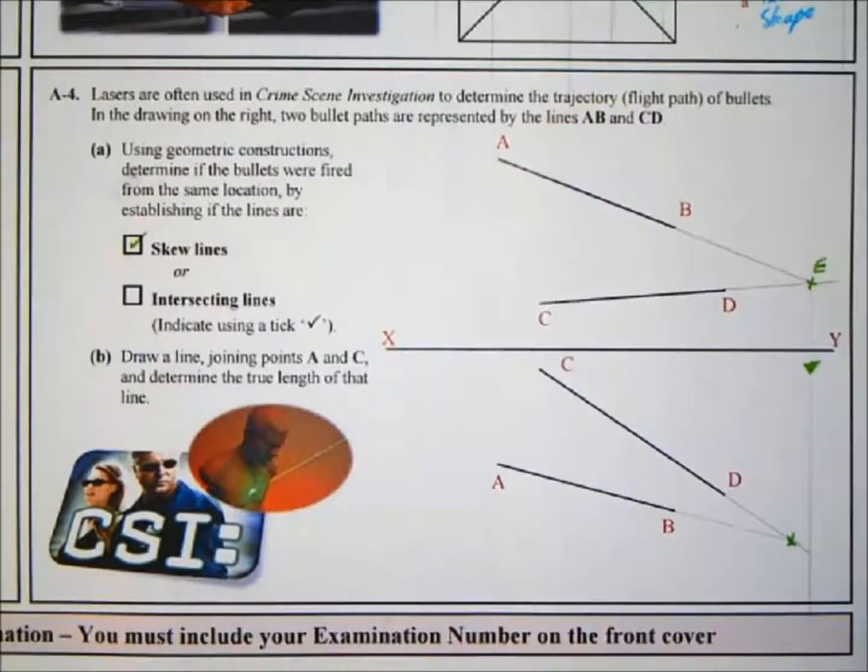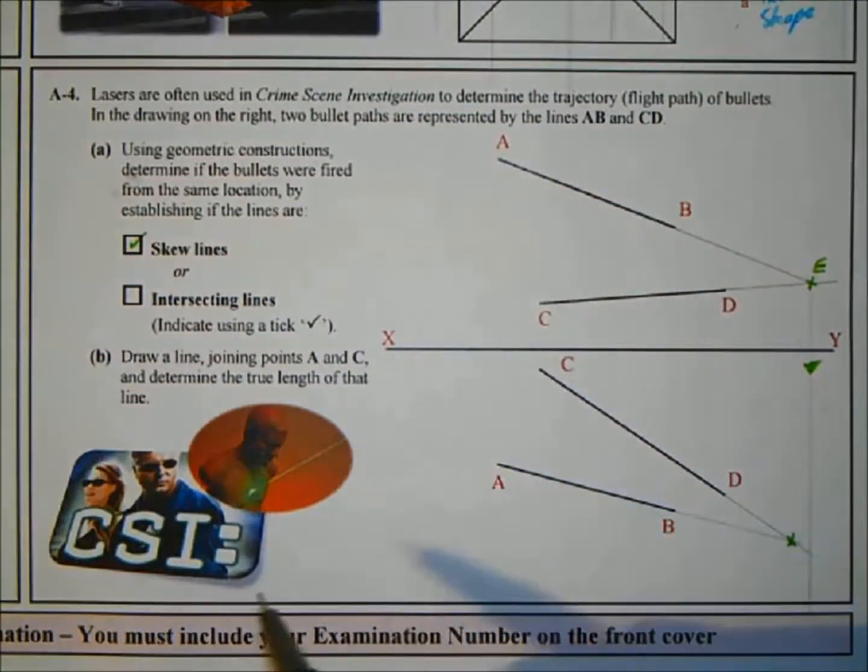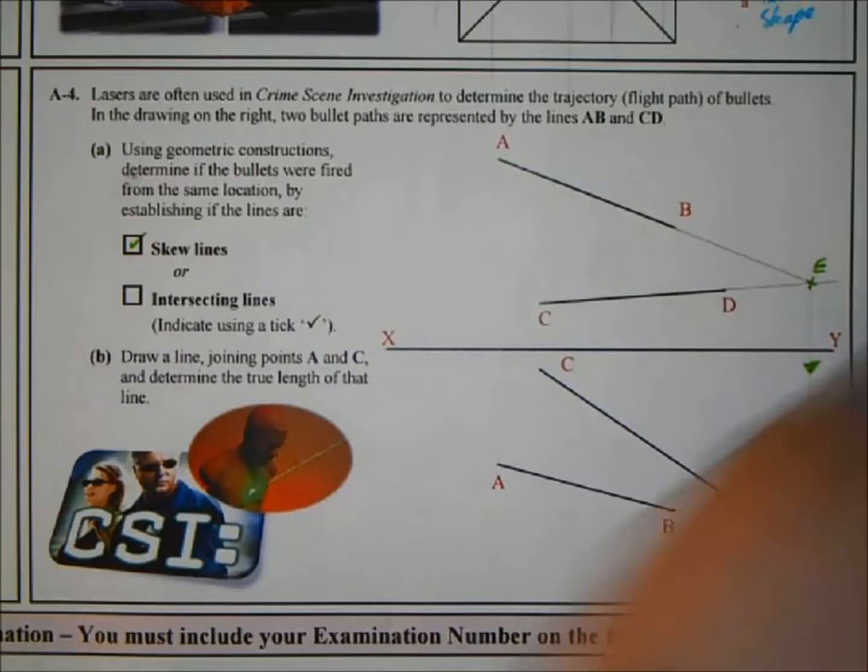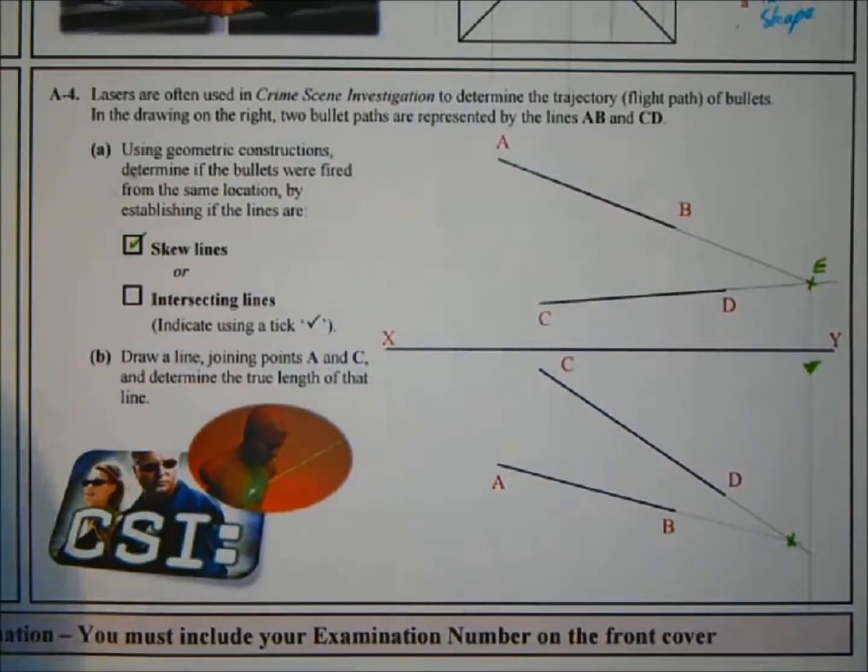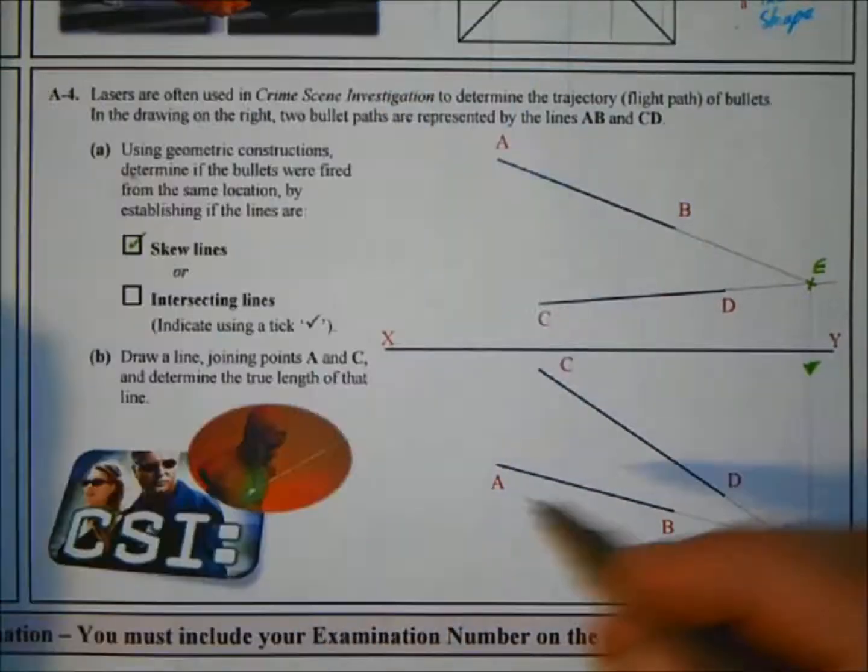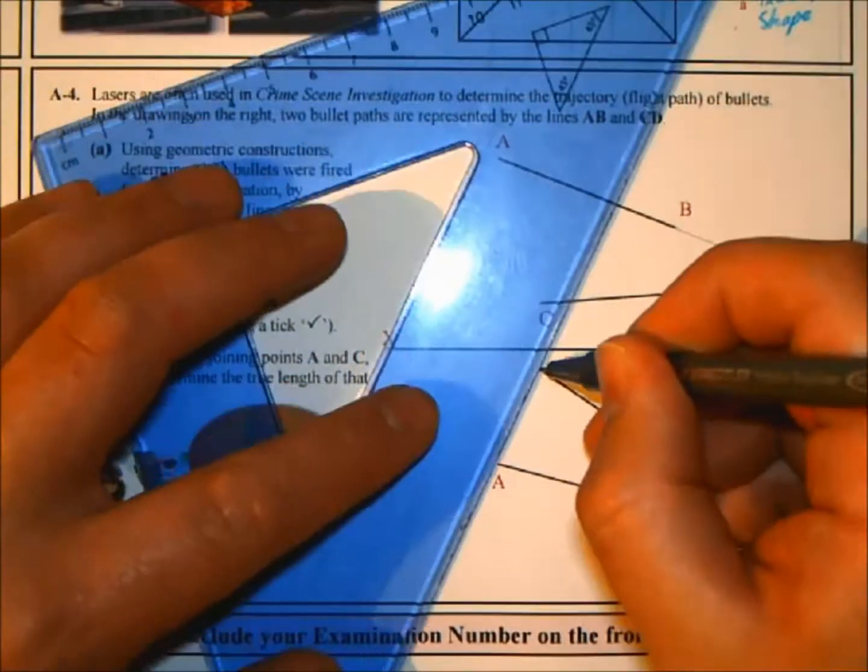Now, draw a line joining points A and C and determine the true length of that line. I'm going to draw from the plan. It doesn't matter, you could do from the elevation as well. Let's go with blue. So from A to C. Join A set to C.